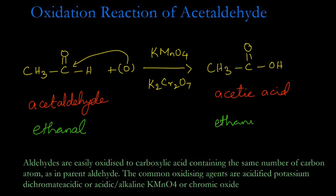To summarize: aldehydes are easily oxidized to carboxylic acids containing the same number of carbon atoms as in the parent compound — in acetaldehyde there are two carbons, and in acetic acid also two carbons. The common oxidizing agents are acidified potassium dichromate, alkaline potassium permanganate, or chromic oxide. In this reaction we oxidized acetaldehyde to acetic acid.